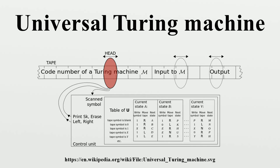The problem of determining whether an arbitrary Turing machine will halt on a particular input, or on all inputs — known as the halting problem — was shown to be, in general, undecidable in Turing's original paper. Rice's theorem shows that any non-trivial question about the output of a Turing machine is undecidable. A universal Turing machine can calculate any recursive function, decide any recursive language, and accept any recursively enumerable language. According to the Church–Turing thesis, the problems solvable by a universal Turing machine are exactly those problems solvable by an algorithm or an effective method of computation. For these reasons, a universal Turing machine serves as a standard against which to compare computational systems, and a system that can simulate a universal Turing machine is called Turing complete.